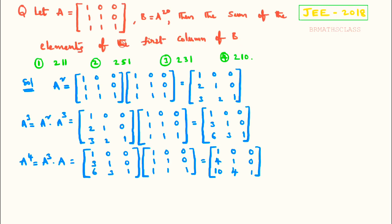Not only the sum of the first column — I can also find the sum of all elements of the second column and third column. To understand the solution, first we need to calculate A square, A cube, and A power 4. A cube is A square into A, and A power 4 is A cube into A.